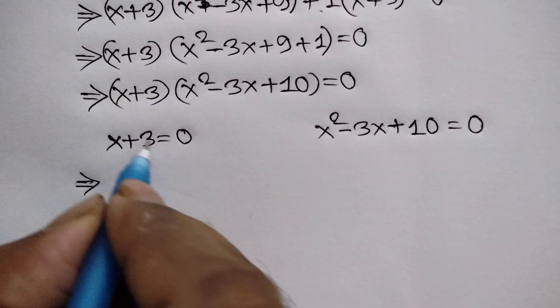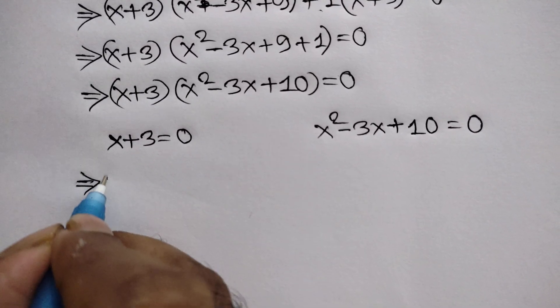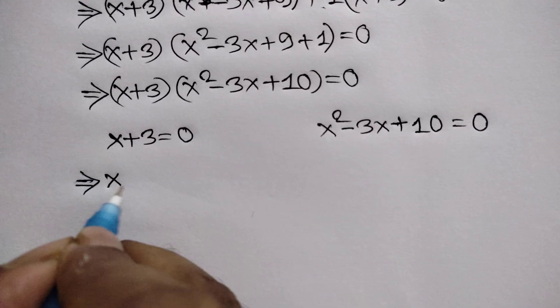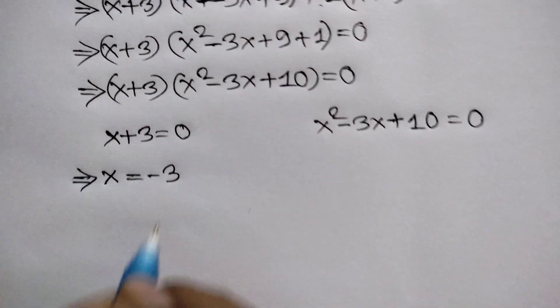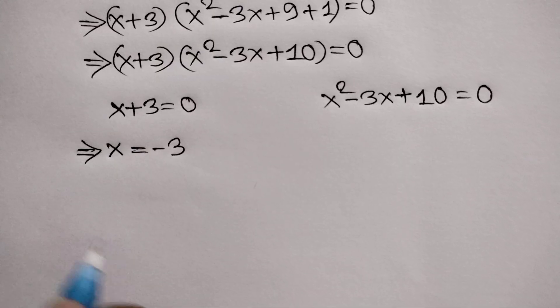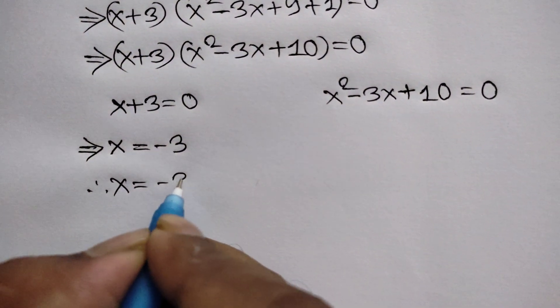Taking this positive 3 to the right side gives us negative 3, so x is equal to negative 3. And that is our first answer.